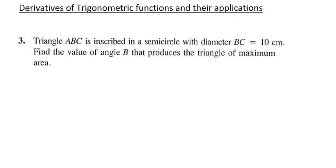All right, so here's an example in section 7.4: applications of derivatives of trig functions. This question says triangle ABC is inscribed in a semicircle with diameter BC equals 10 centimeters. Find the value of angle B that produces the triangle with the maximum area.